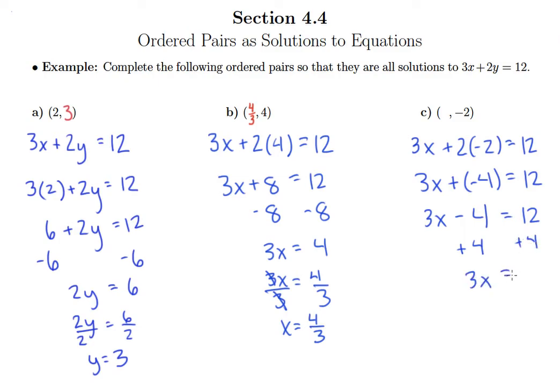So 3x equals 16. And then we isolate x by dividing by 3 on both sides. So x equals 16 thirds. So the completed ordered pair that would be a solution to 3x plus 2y equals 12 would be 16 thirds comma negative 2.